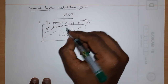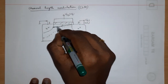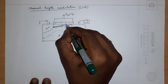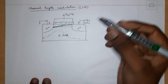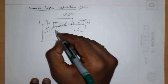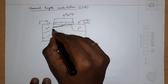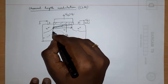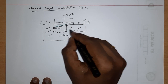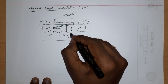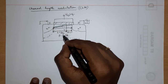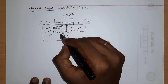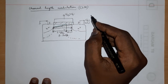If you increase VDS further — shown by the green line — the channel is cut off even more. This pinch-off point becomes even smaller. Initially you had a channel length L, but now your channel length has become L minus delta L, where delta L is the reduction at the drain end due to the increase in VDS.